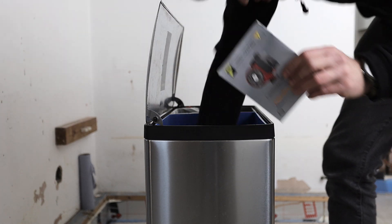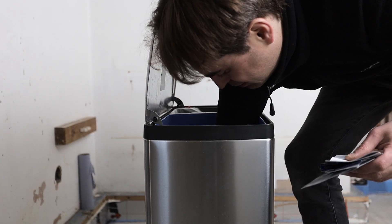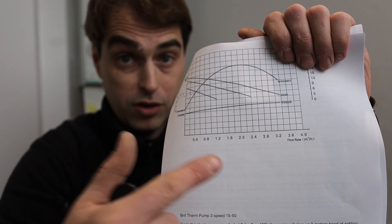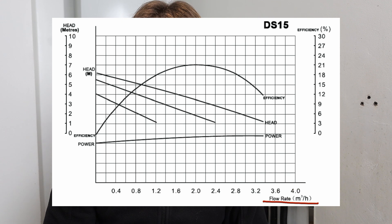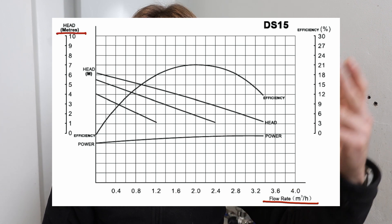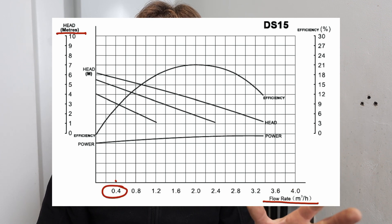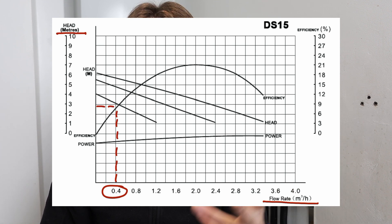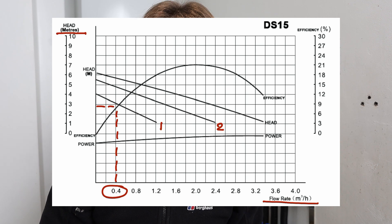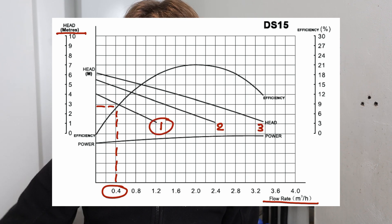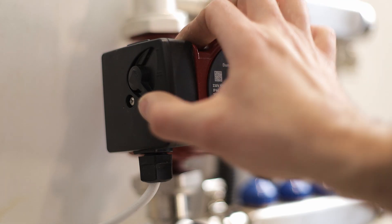Now find that manual you binned earlier, dig it out and find the pump chart. On the horizontal axis you get your flow in liters per hour or cubic meters per hour; on the vertical axis you get the available pump head. At 0.4 cubic meters per hour we're getting around 2.5–2.7 meters of pump head available, and we only need 1.2 meters. Looking at the chart, setting number one provides more than enough head, so there's no need to run the pump higher than setting one. Drop it from 3 to 1.